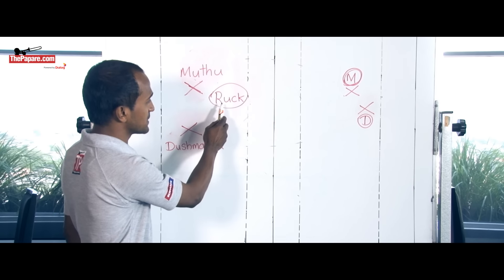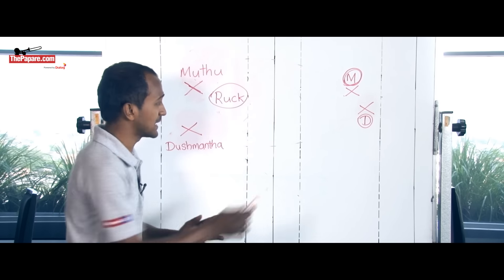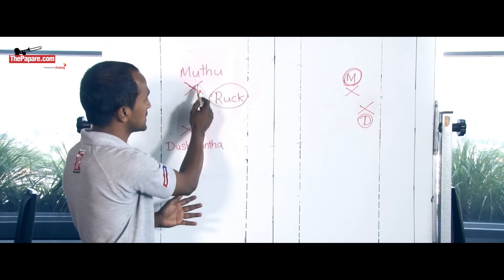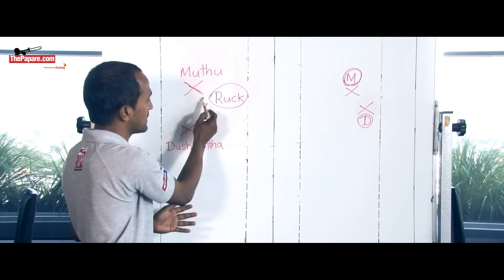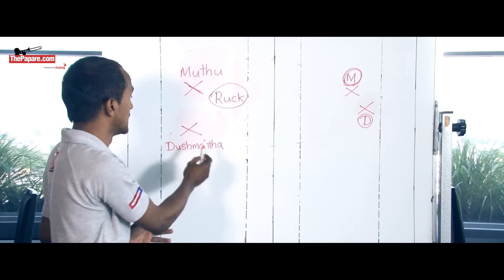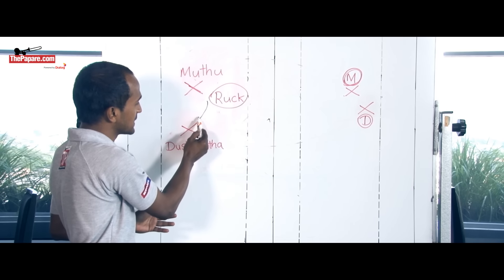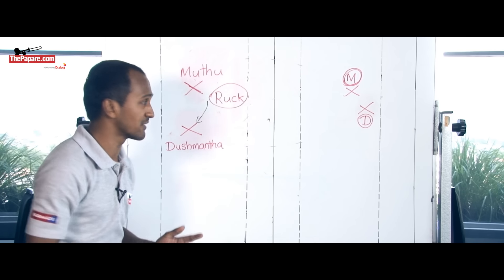Now this is how they got a ruck situation here. Danushka Ranjan going into the contact, receiving a kick from Mohammed Sharif, and he went into the contact. Sudarshan Muthu Tantri coming all the way from here and playing as a nine on that occasion. And Dushman the Priyedarshan, he was somewhere here. And he all the way came in as the first receiver to collect the ball from Sudarshan Muthu Tantri.